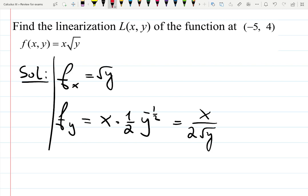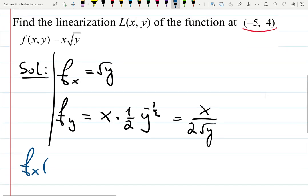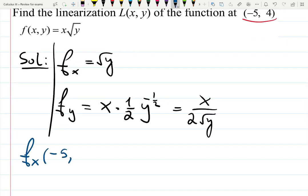Plug in the point they gave us, which is (-5, 4). I will write down in blue: the partial derivative with respect to x at (-5, 4). If you're new to multivariable functions and derivatives, maybe take a pencil and write down - this is your x and this is your y. So it's going to be the square root of 4, which is 2.